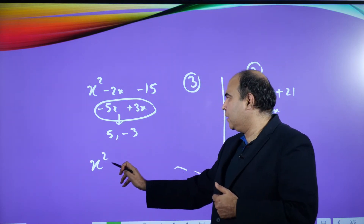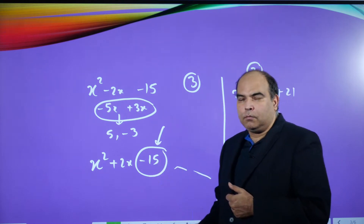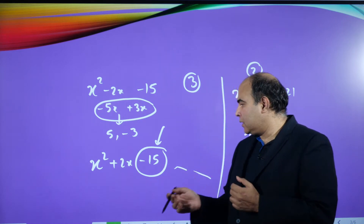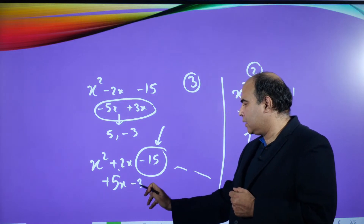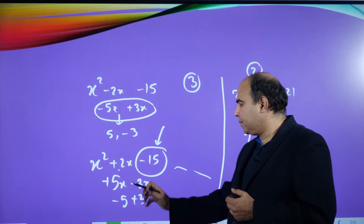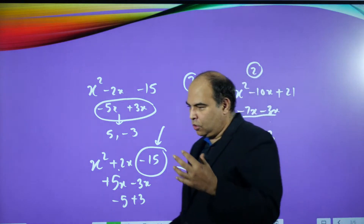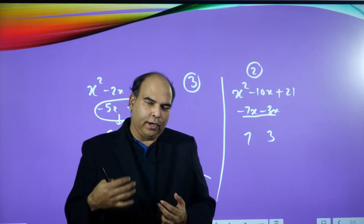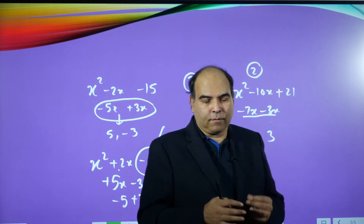The trigger is always in the constant term — whether you take the split with the same sign or opposite signs. After a little practice, this should take you 3 seconds. Of course, where you need to use the quadratic formula (-b ± √(b²-4ac)) / 2a — when the roots are irrational or in decimals — you can't avoid it. But when the roots are integers, you should be able to solve it with this mental approach.